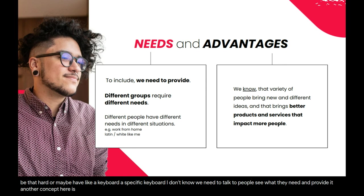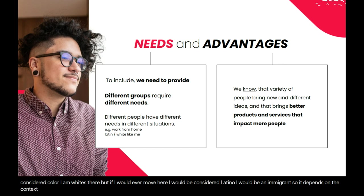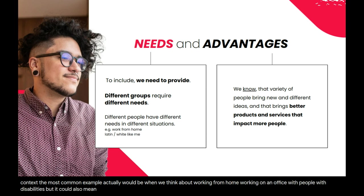Another concept here is that different situations require different needs. In my home country I am the majority of the population in terms of color — I am white there. But if I moved here, I would be considered Latino, I would be an immigrant. So it depends on the context. The most common example would be working from home versus working in an office for people with disabilities. But it could also mean I would require people to use my pronouns, or have a name tag so everyone would know each other's pronouns. It depends on the situation.